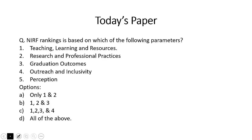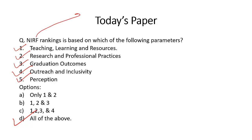Now let's look at some prelims-based questions. NIRF rankings are based on which parameters? The answer is all of the above: teaching, learning and resources; research and professional practices; graduation outcomes; outreach and inclusivity; and perception. The National Institutional Ranking Framework was approved by MHRD in 2015 and outlines the methodology to rank institutions. You should remember all five parameters on which NIRF rankings are based.